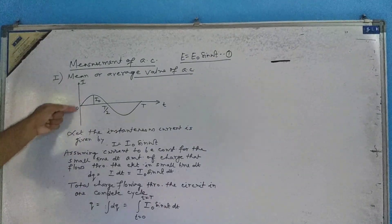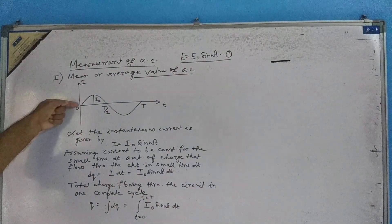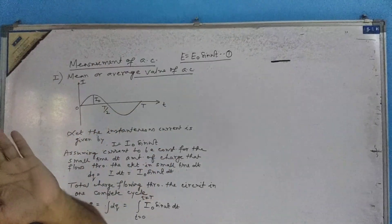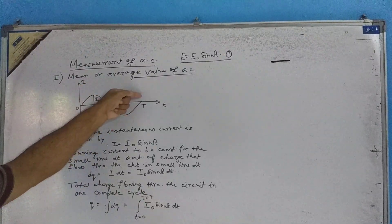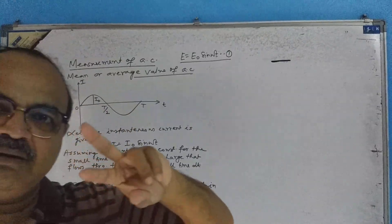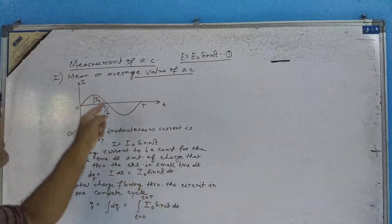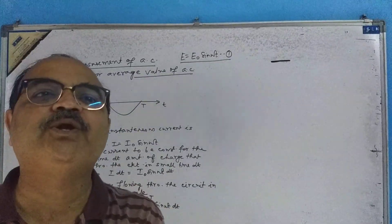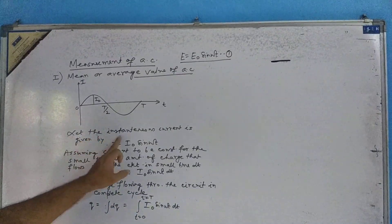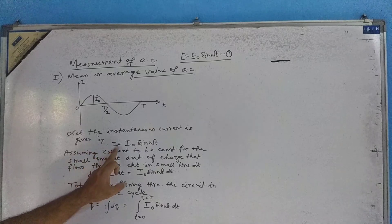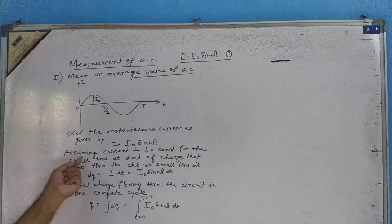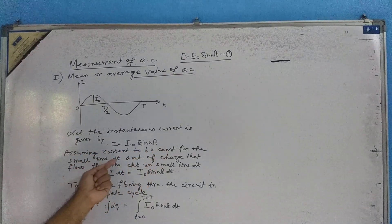Look, this is the current AC and this is the time — it is varying like this, unlike DC. It is continuously varying in the positive half cycle and negative half cycle. Zero to T by two is one half period. In one time period, one cycle is obtained due to one complete rotation of the armature or the coil. So I can write here: let the instantaneous current be given by I is equal to I naught sine omega t.